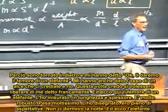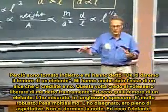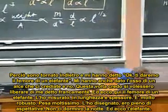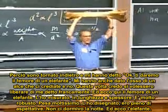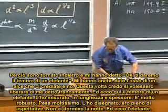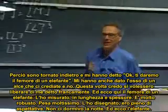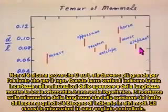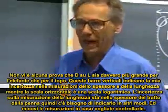And so I went back, and they said okay, we'll give you the femur of an elephant. They also gave me one of them, believe it or not — I think they wanted to get rid of me by that time, to be frank with you. And here is the femur of an elephant. I measured the length and the thickness. It is very heavy — it weighs a ton. I plotted it. I was full of expectation; I couldn't sleep all night. And there is the elephant. There is no evidence whatsoever that D over L is really larger for the elephant than for the mouse.